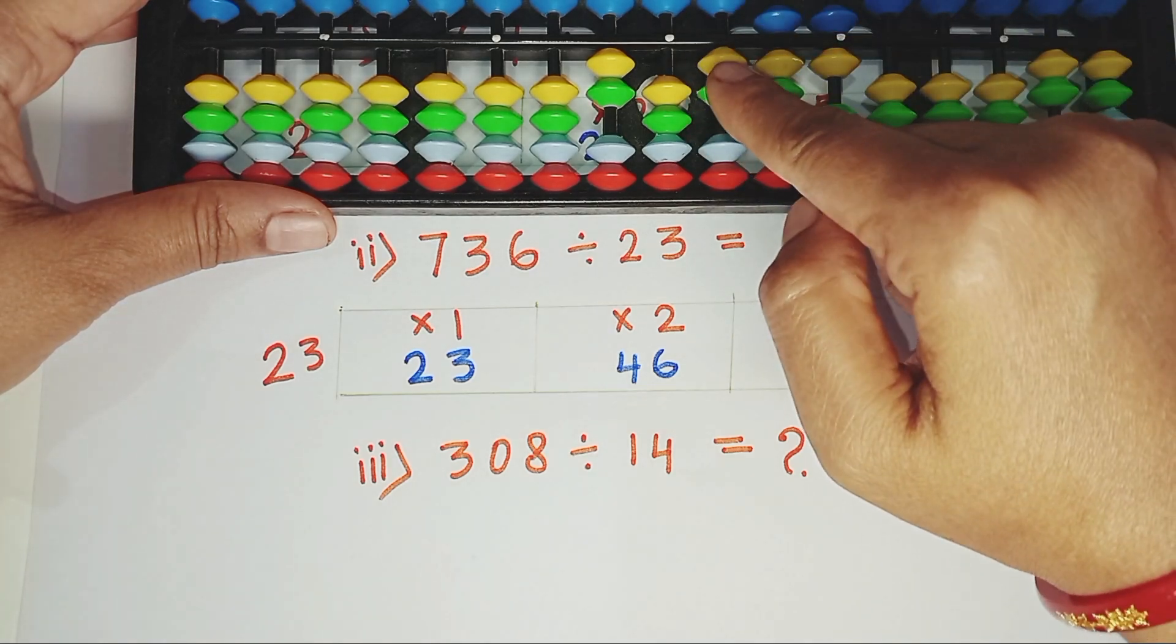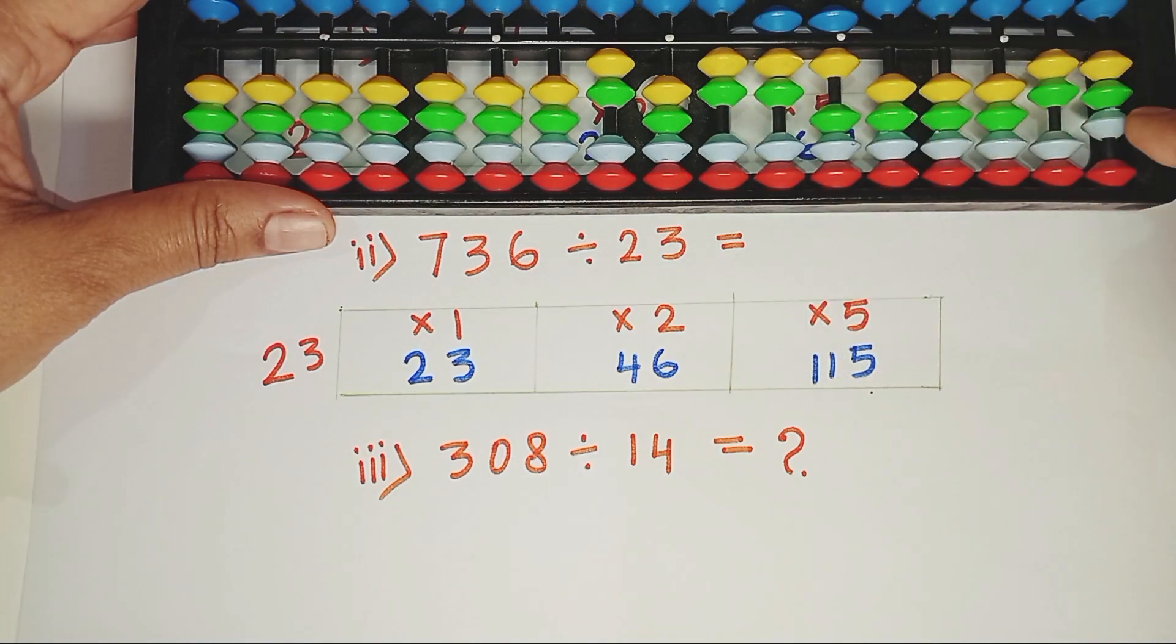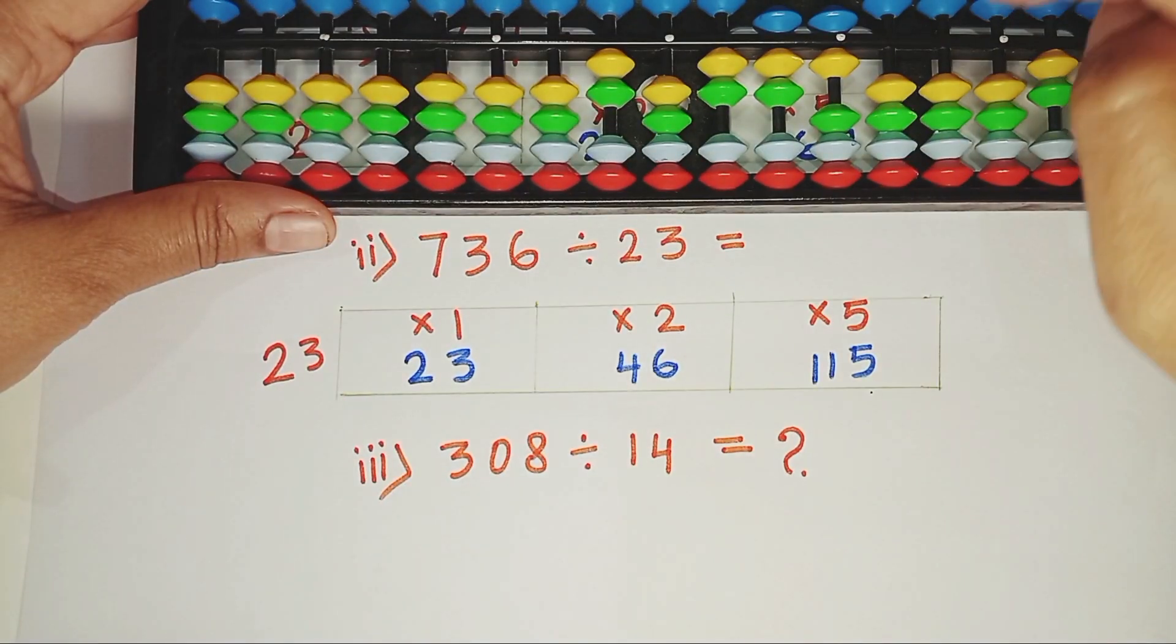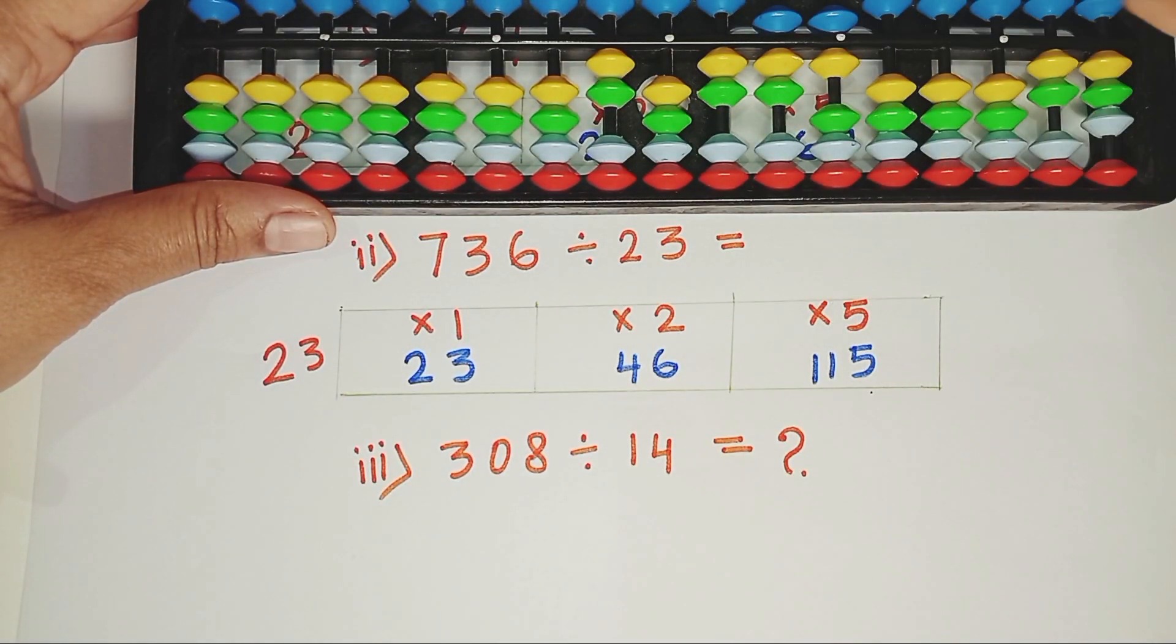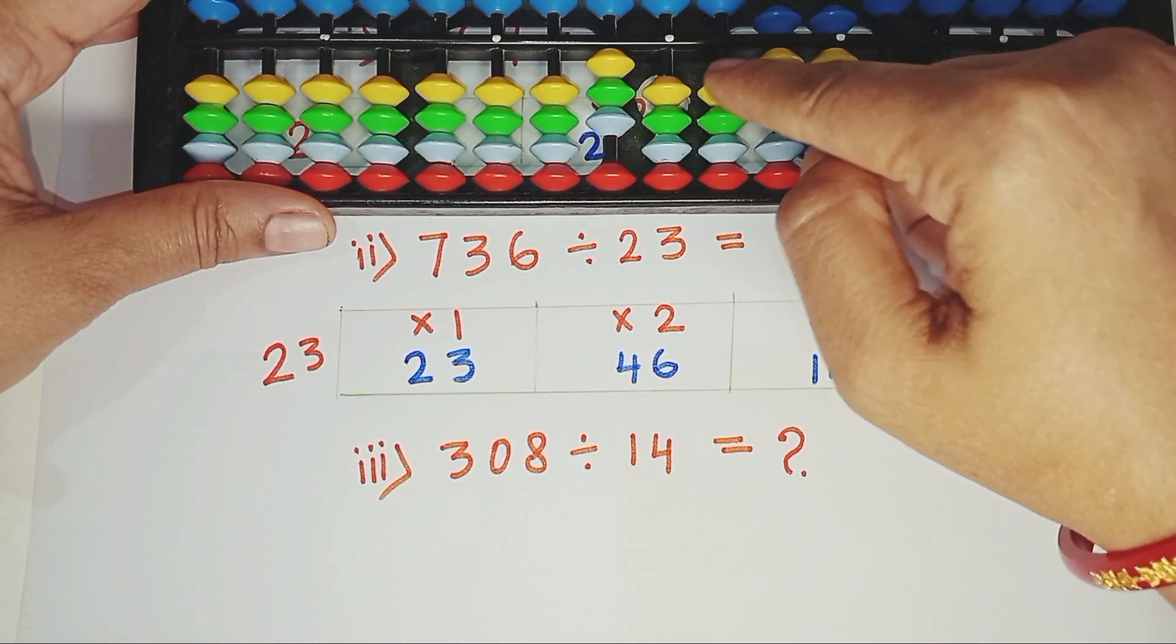Again, we will consider 2 rods. 2 and 7, which is 27. 27 is not divisible by 23. But we can get the nearest answer. 23 times 1, 23. As we consider 2 rods and divisor has 2 digits, we will jump one rod and place the answer here. 23 times 1, 23.